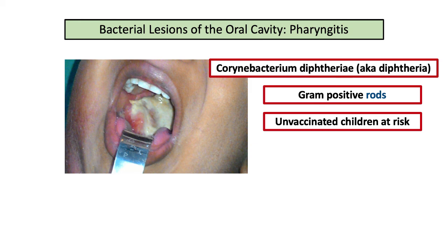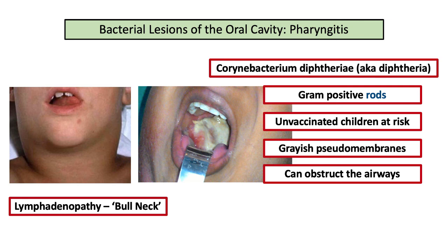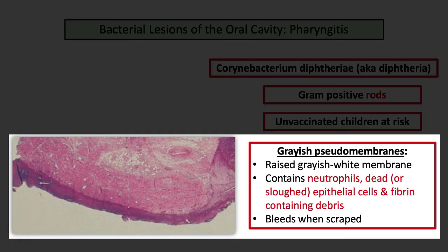The key demographic for diphtheria questions is unvaccinated children — most often described as coming from a developing country or from parents who are morally opposed to vaccinations. In terms of classic findings, pharyngitis caused by diphtheria is characterized by grayish pseudomembranes that can result in airway obstruction. Patients may also have severe lymphadenopathy, euphemistically described as a bull neck appearance. When you hear pharyngitis with gray-white pseudomembranes, think diphtheria. Be prepared to identify the pathologic description: a raised grayish-white membrane composed of neutrophils, dead or sloughed epithelial cells, and inflammatory fibrin-containing debris. The pseudomembrane may be described as bleeding once scraped.